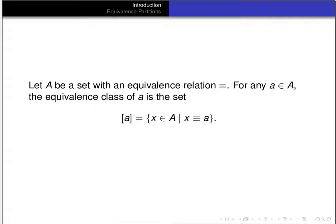Once we define an equivalence relation, we can define an equivalence class for every element of the underlying set. So if A is a set with an equivalence relation, for any element a of that set A, the equivalence class of a is the set of all x in A such that x is equivalent to a.